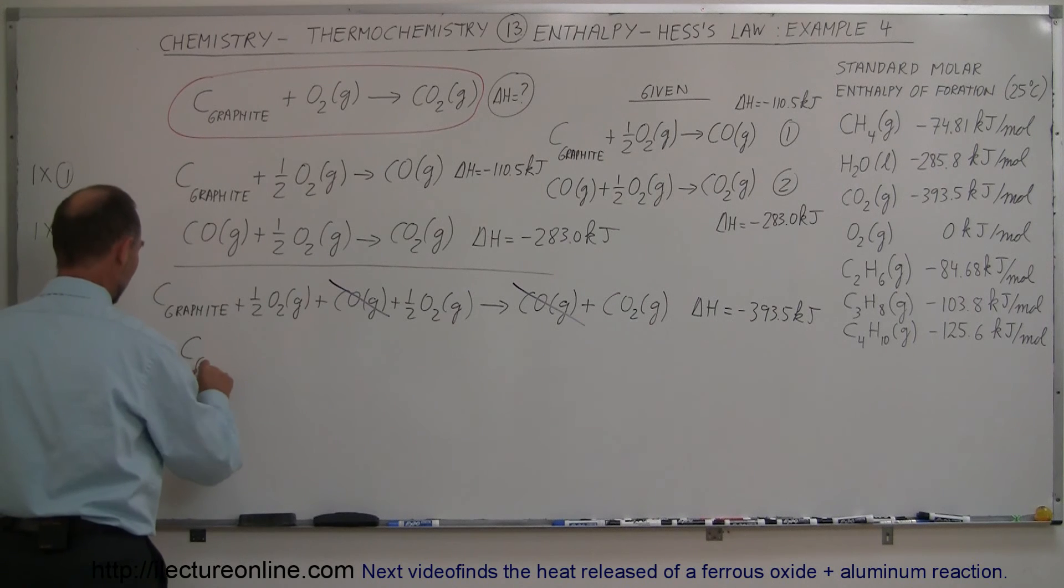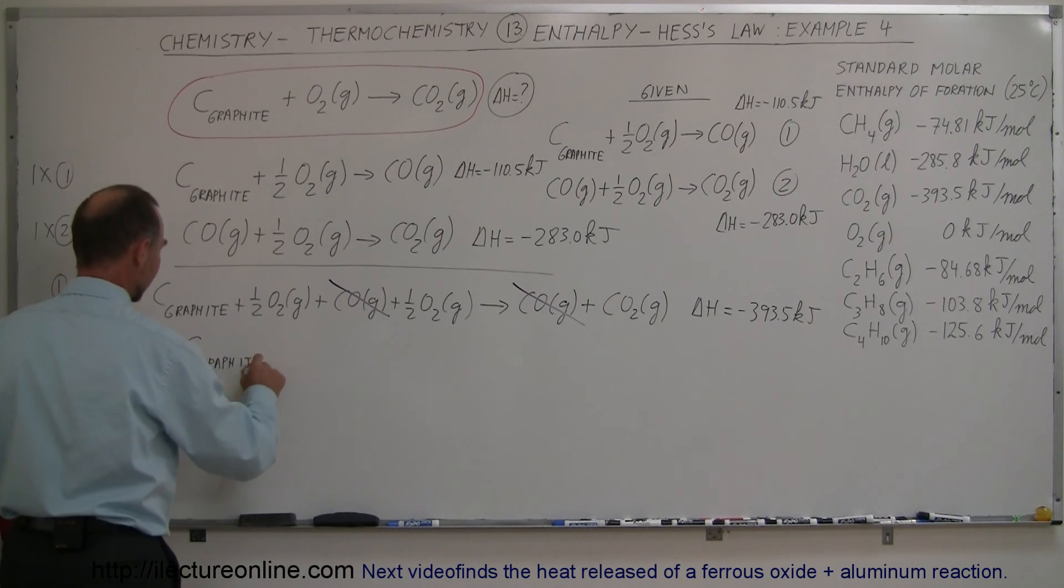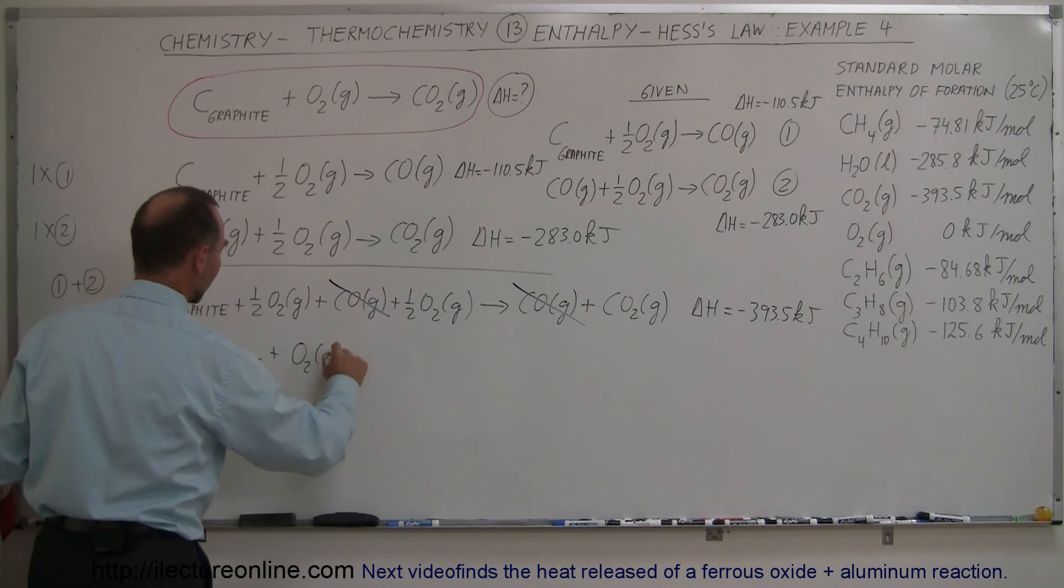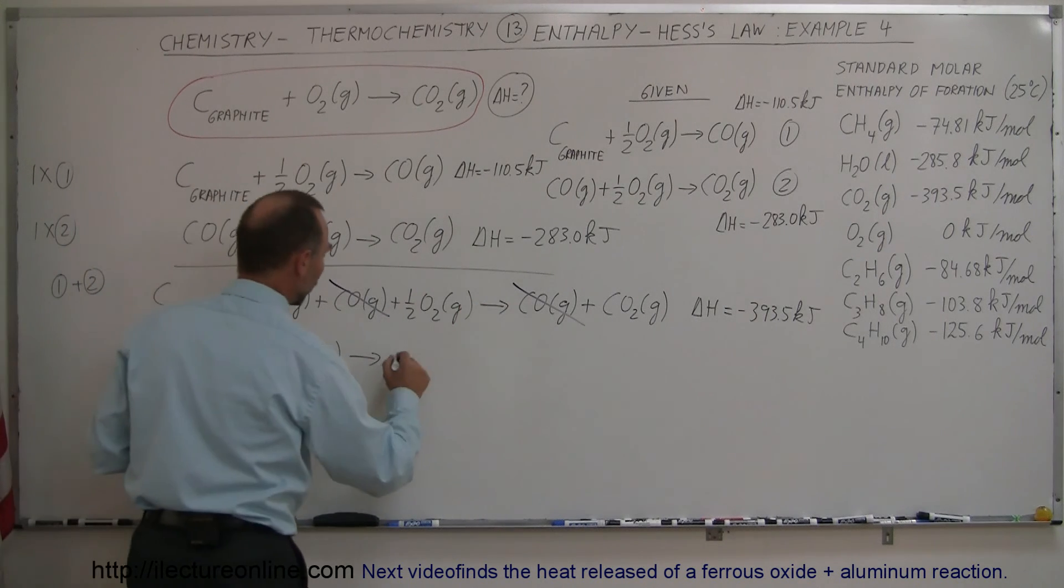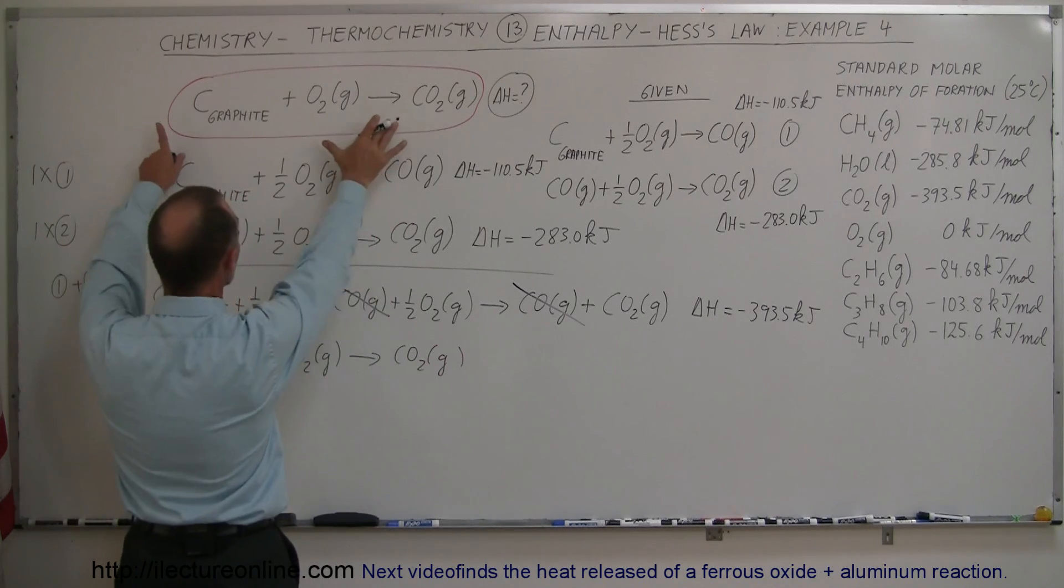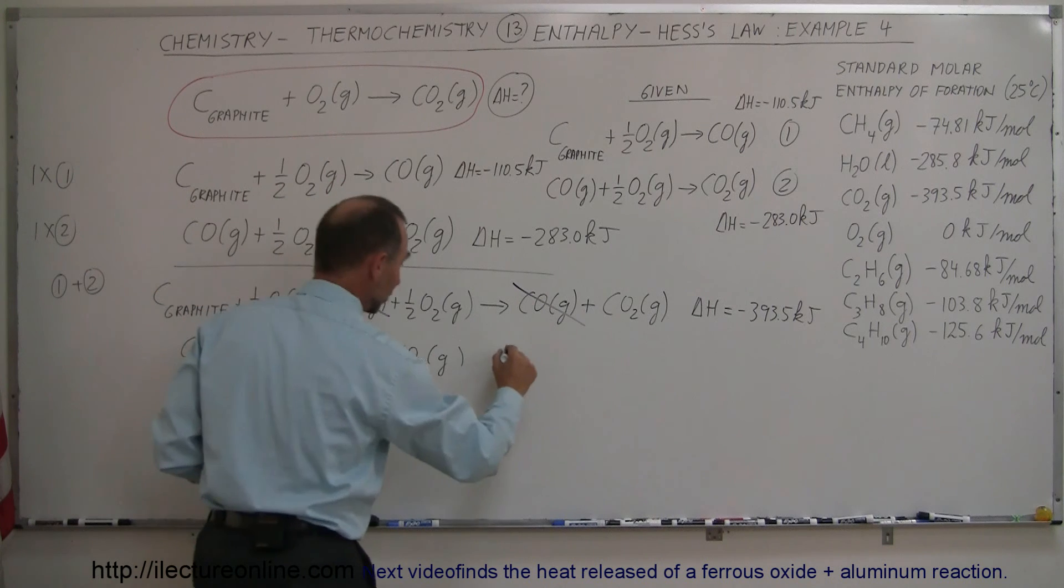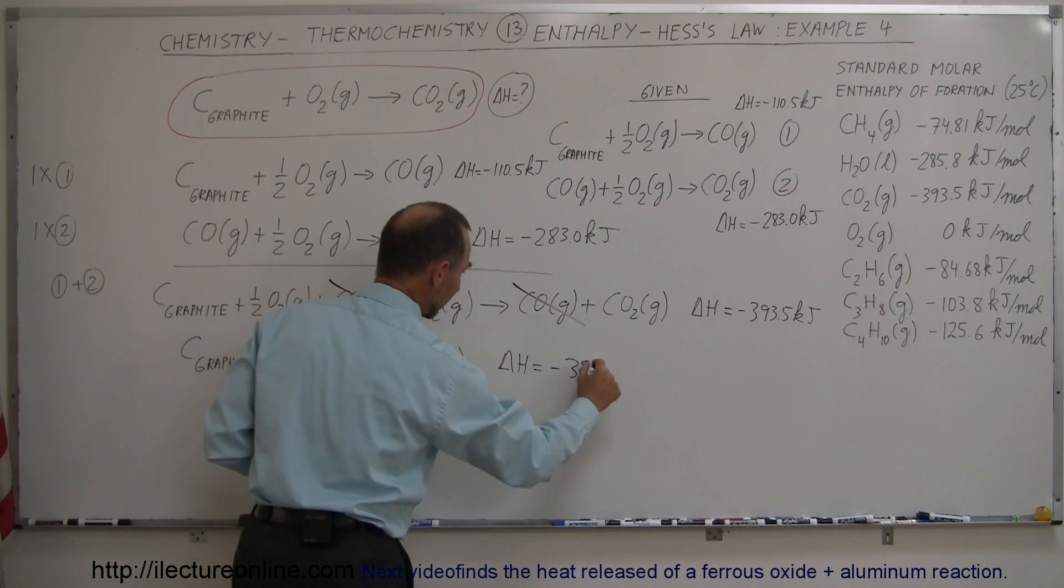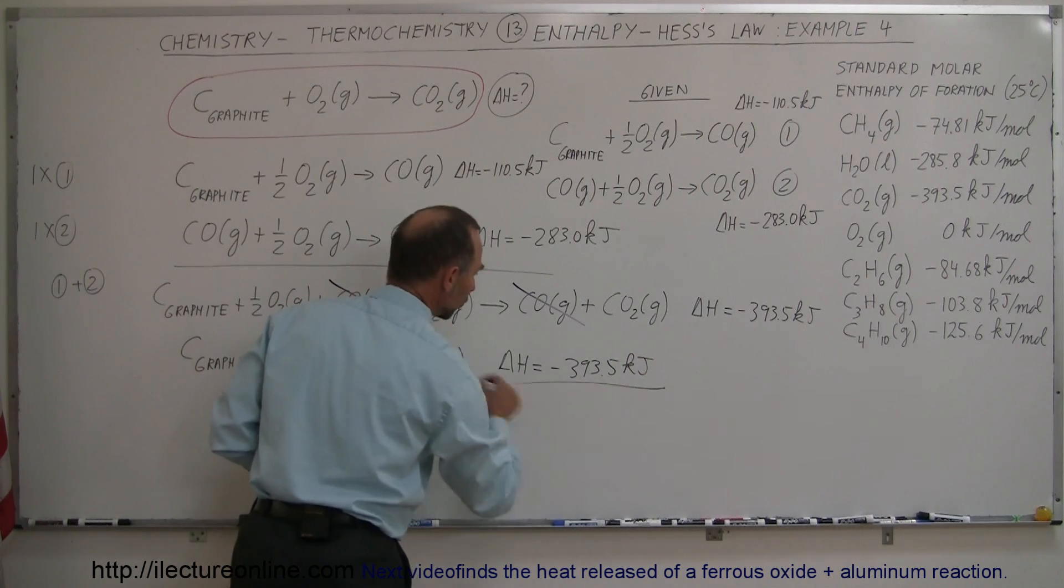Alright, so one mole of graphite plus a half and a half, which makes one mole of oxygen gas, reacts to form one mole of carbon dioxide gas, which is exactly what I was looking for. That means the enthalpy change for that reaction is equal to minus 393.5 kilojoules.